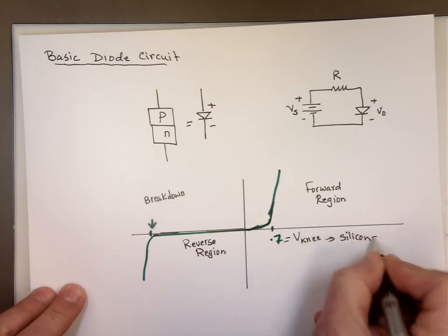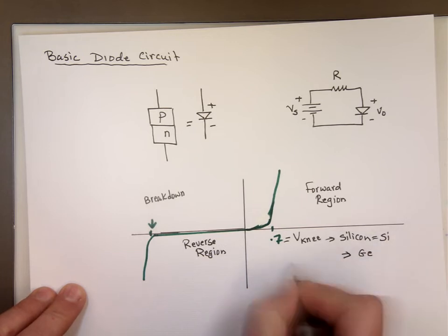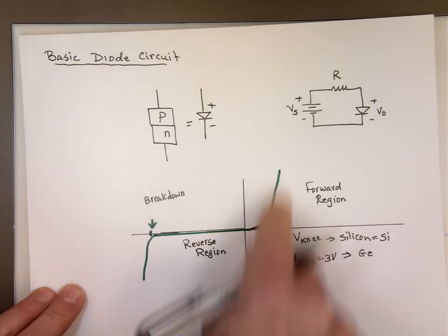For germanium, that's SI. For germanium, GE, the knee voltage is actually 0.3 volts. So it doesn't take much for the current to flow through it.